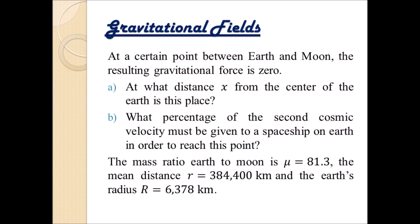At a certain point between Earth and Moon, the resulting gravitational force is zero. Part (a): at what distance x from the center of the Earth is this place? Part (b): what percentage of the second cosmic velocity must be given to a spaceship on Earth in order to reach this point? The mass ratio Earth to Moon is µ equals 81.3. The mean distance between the center of Earth and center of Moon is r equals 384,400 kilometers, and Earth's radius R equals 6,378 kilometers.